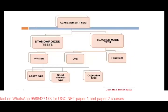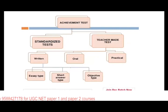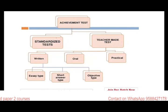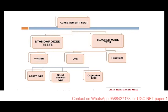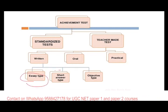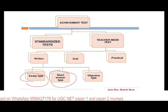Achievement test is divided into two: standardized and teacher-made. Standardized test follows a format or standard from one institute to another. Teacher-made test includes oral, written, or practical examinations. Written tests are based on essay type, short answers, or objective type; oral is verbal; and practical involves demonstration.